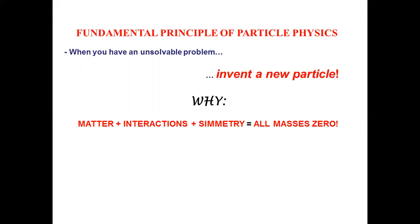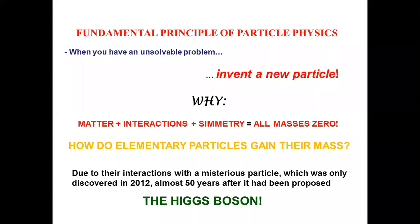The problem here is that the standard model is a theory, an extremely well successful theory, based on the idea of symmetry. Symmetries are what control these interactions among particles. And when you add up matter, interactions and symmetry, then the theory forces all of the masses in the model to be exactly equal to zero. We introduce a new particle, and we've done it in 1964. That's the theory of the Higgs boson. Almost 50 years after that theory was proposed, the Higgs boson was discovered.